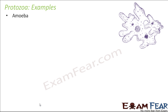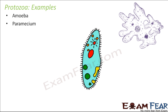One example of protozoa is amoeba, which is unicellular. As you can see in the picture, amoeba is just one cell, and that single cell performs all required processes — including ingestion of food and ejection of waste.